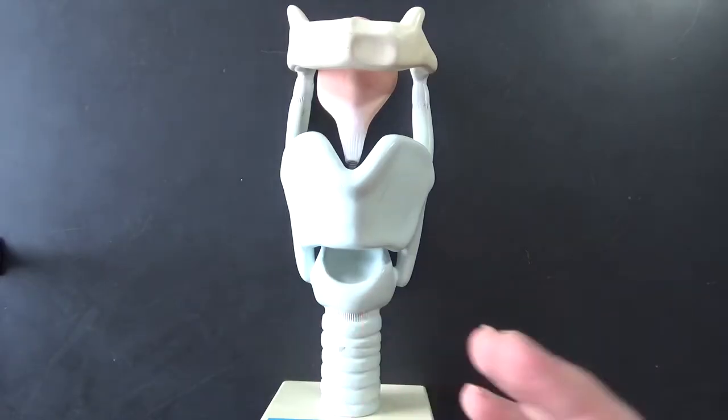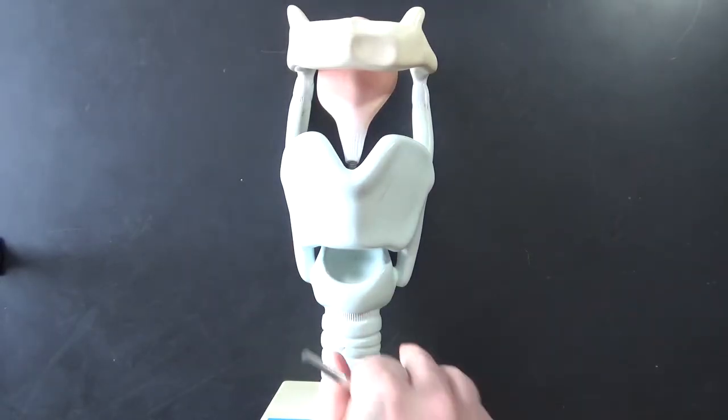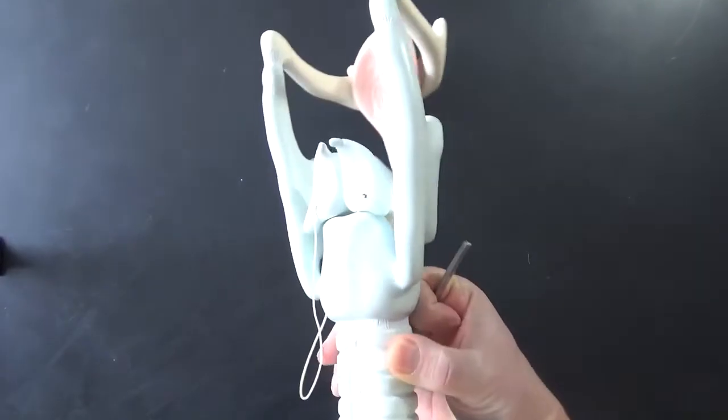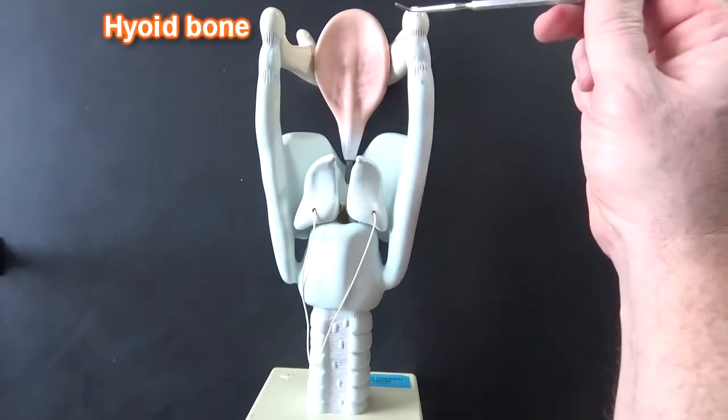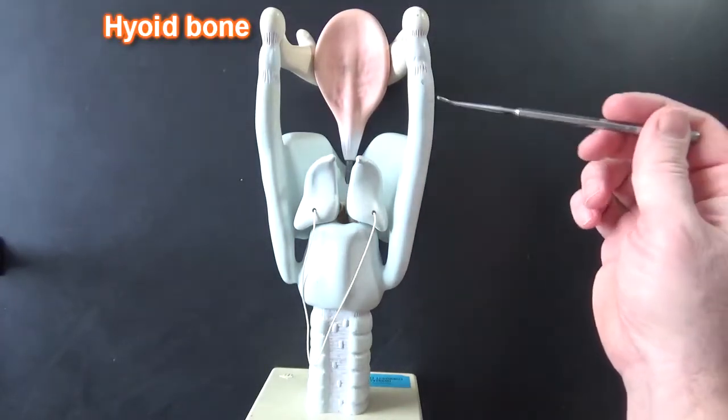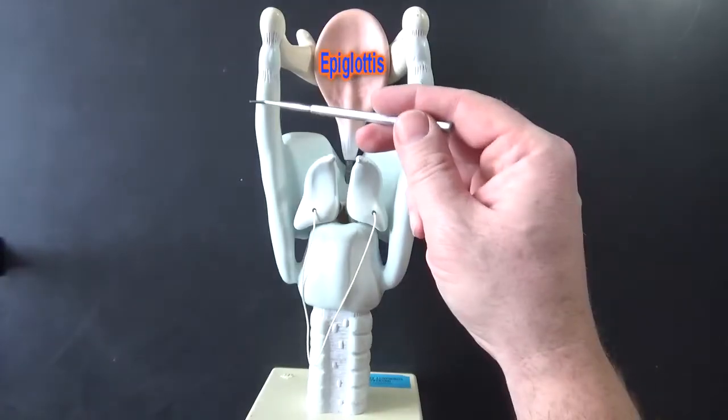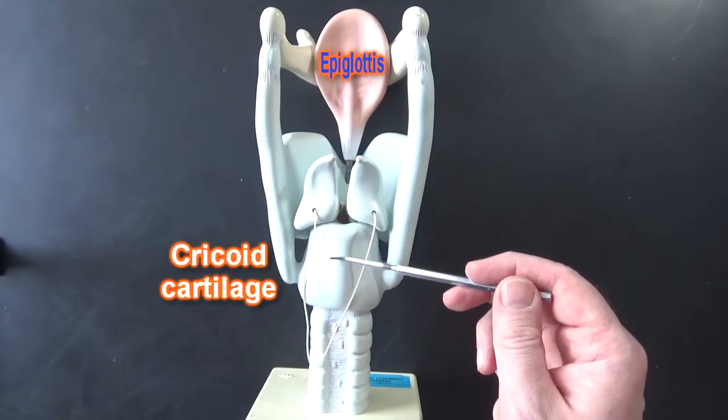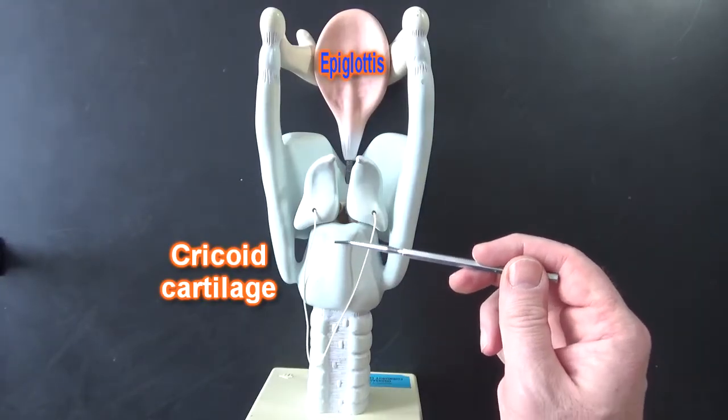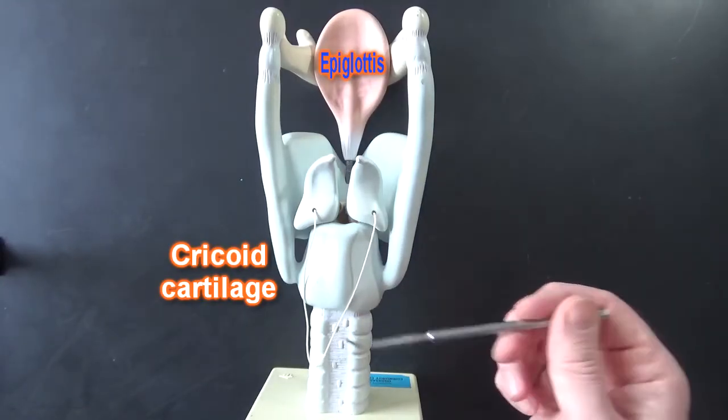Now what I'm going to do is turn this to the other side so that we can see the structures in the back. Here we can see the posterior aspect of the hyoid bone, thyroid cartilage and cricoid cartilage. Notice the cricoid cartilage is larger on the posterior than it is on the anterior.